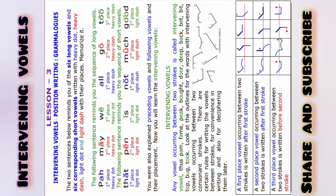Examples: palm, bought, back, top. These are first place vowels. A second place vowel occurring between two strokes—examples: fame, name, bait.